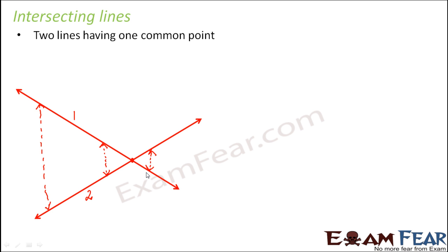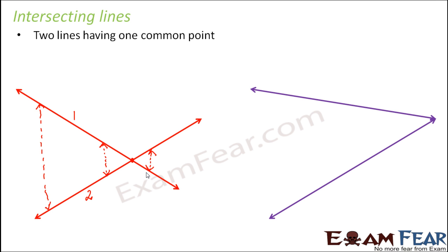It is not always necessary that the lines will actually cross over each other. In some cases, the distance between the two lines is gradually reducing. Even if you do not actually see them meeting at a point, you can guess that since the distance is gradually decreasing, they appear to meet at a point. In that case also, they are considered intersecting lines and not parallel lines. For two lines to be parallel, the distance between them must remain the same throughout.